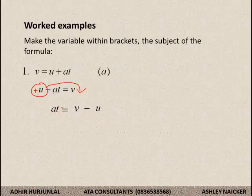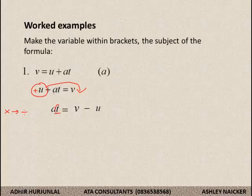Then I go further. On the left-hand side I still have at, but I only want a. How are a and t combined? They are multiplied — t is multiplied into a. According to my rule, multiplication must become division. So the t is multiplied on the left, but when it hops over to the right it needs to be division. So ultimately a is equal to v minus u divided by t. That is the answer. I have manipulated for a.